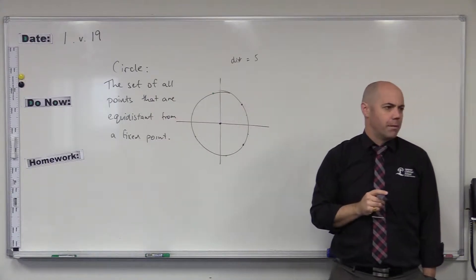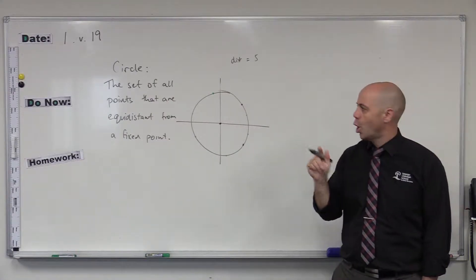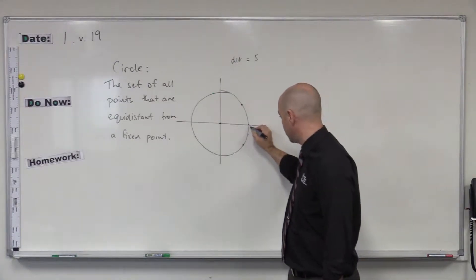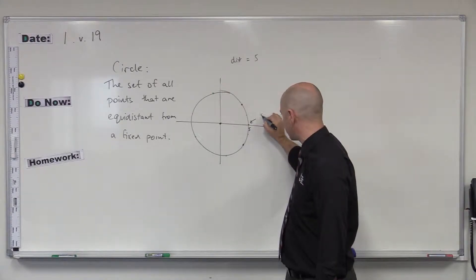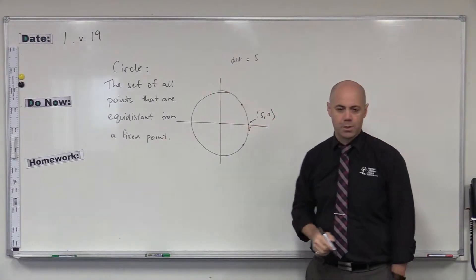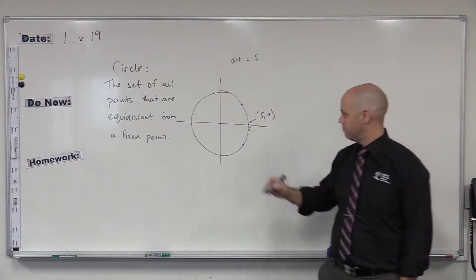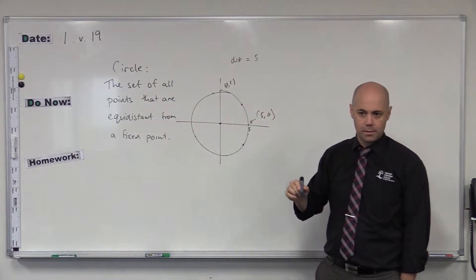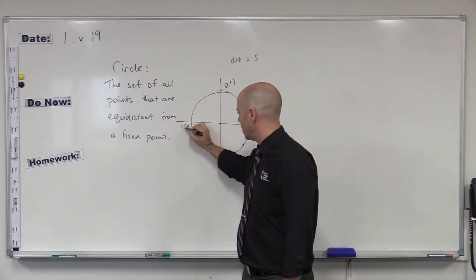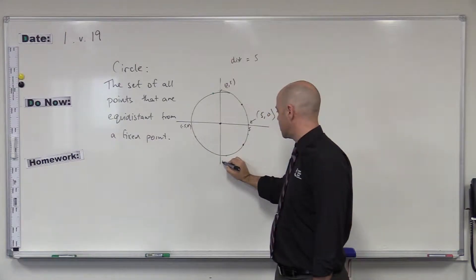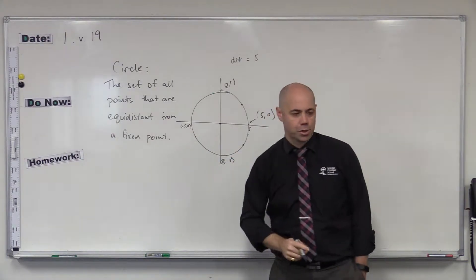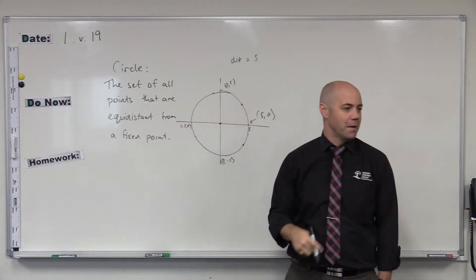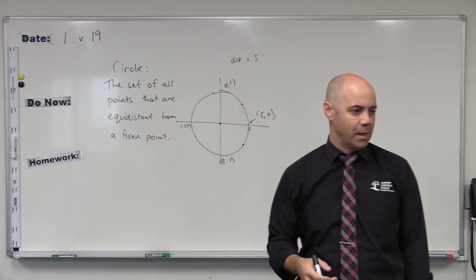So you could come up with some points immediately. Give me one point you know will be part of that circle. 5, 0. Perfect. So this point here is 5, 0 because that's 5 from there. What's another point? 0, 5. 0, 5 up here. What else? Negative 5, 0 over here. And 0, negative 5. That's awesome. Okay, we've got four points. There's a whole lot more points, aren't there? All these points in between. In fact, there's an infinite number of points that exist on this circle.